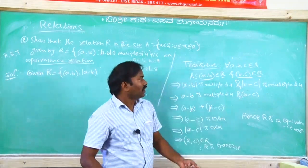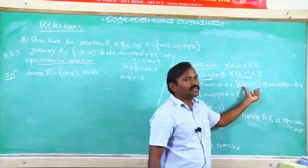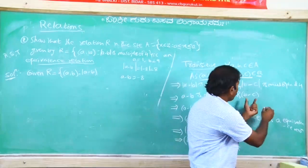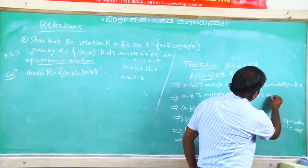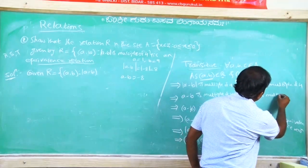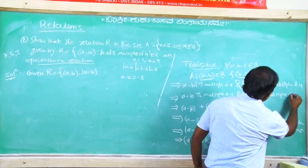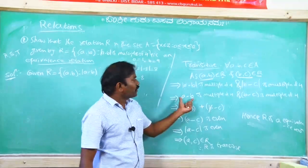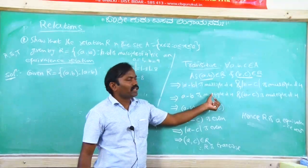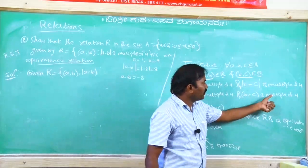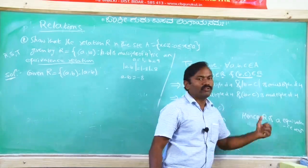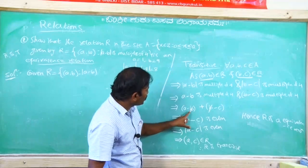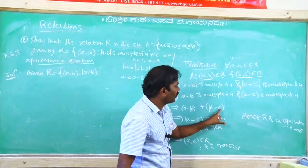And if |B - C| is a multiple of 4, then B - C is also a multiple of 4. Next, since A - B is a multiple of 4 and B - C is a multiple of 4, take the sum of (A - B) and (B - C).